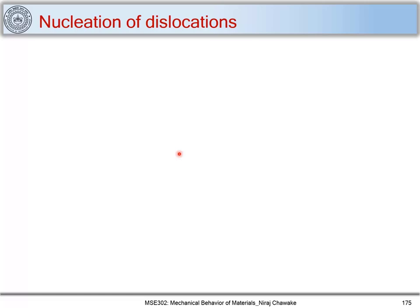In the last part we saw that an increase in dislocation density increases the shear stress required to move dislocations. In this part we will see how and why this dislocation density increases, but before looking into that we will see how dislocations nucleate first in a material. There are several reasons, and the first major reason is solidification or cooling down from high temperatures.